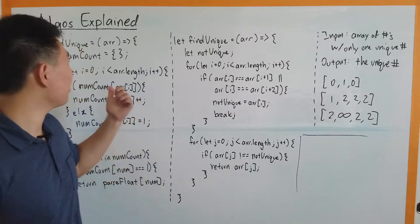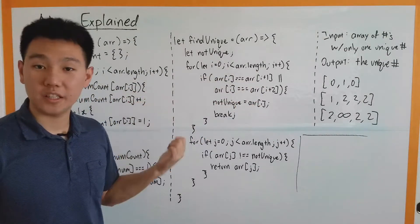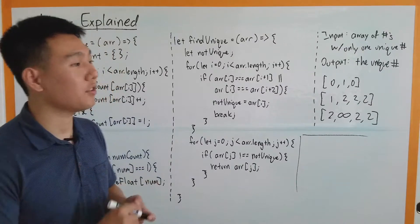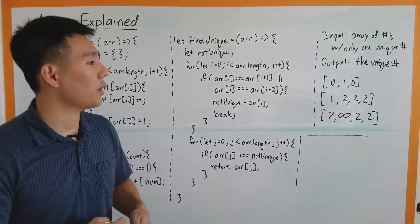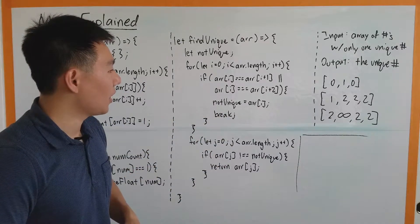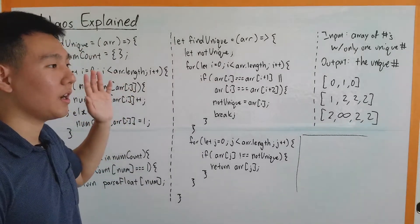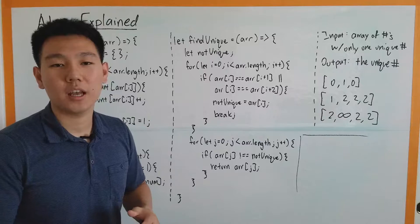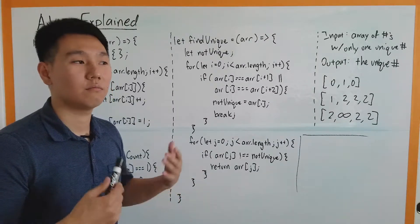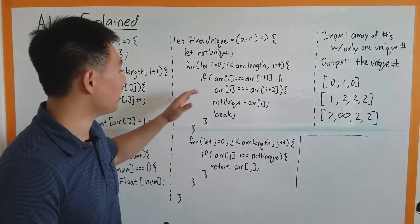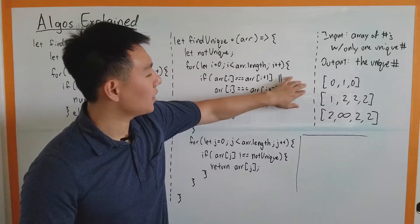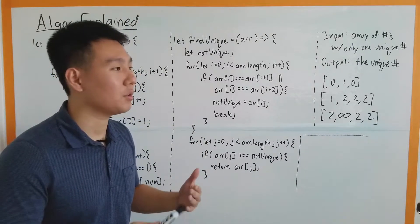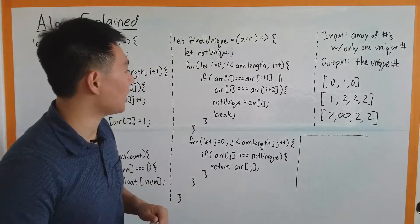So we just went over how to solve this problem using a data structure. But say you have restrictions and you need to not use a data structure — that's sometimes a real restriction. If you have that restriction, here's how you would do it. We know it's convenient to store information in a data structure, especially since we could have one or an infinite amount of numbers. But if you can't use another data structure, we can still use what we know: there are only ever going to be two numbers, and the unique number is only one — it's never going to take more than one step away.